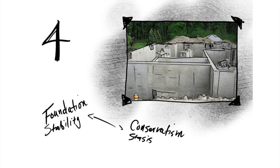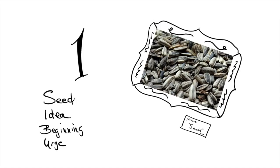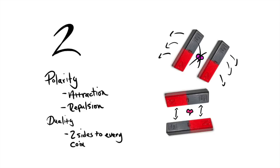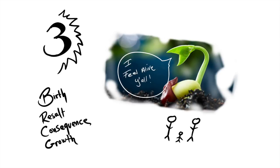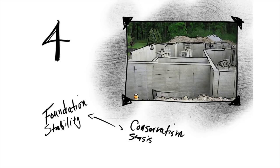With four, things change. Four stabilizes — it's a square, a foundation, a cube. If you think about the Emperor in the Majors you get a similar sense of that solidity. Fours represent foundation and stability. But now we start filtering in light and shadow. Foundation and stability also have stasis and conservatism on their shadow side, which is really important as we move into five.